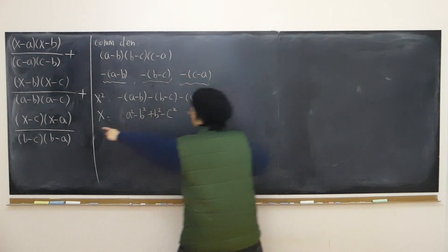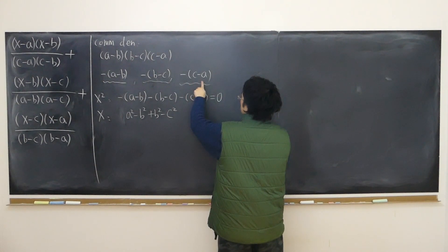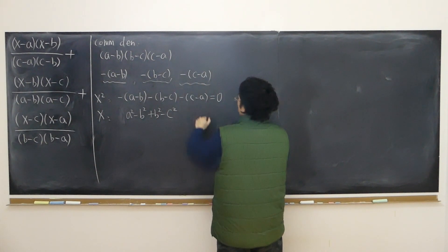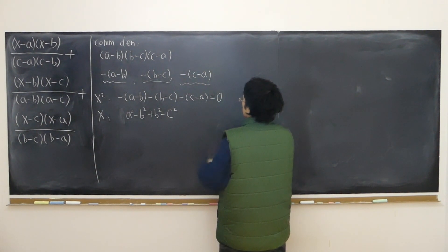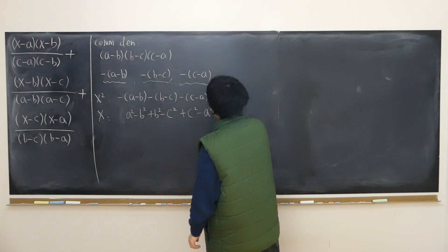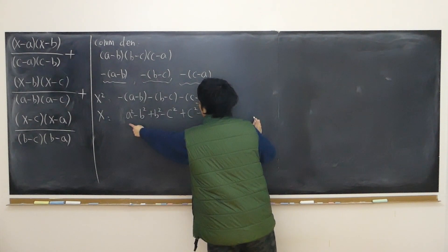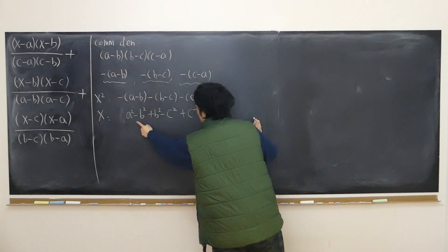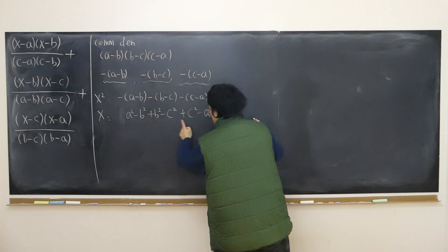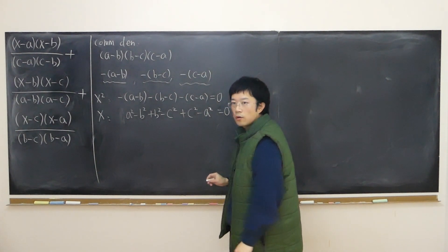Likewise, the third term: minus of (c plus a) times negative of (c minus a) becomes plus (c-squared minus a-squared). It turns out to be zero again, because a-squared minus a-squared, minus b-squared plus b-squared, minus c-squared plus c-squared all cancel. So there's no more x term.